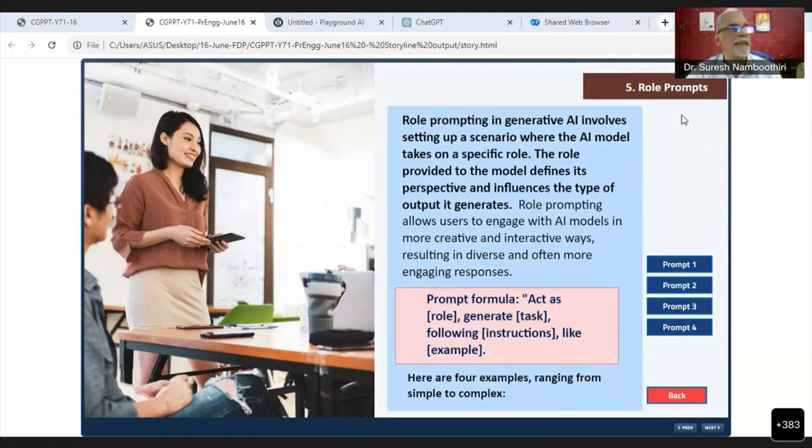Role prompting in generative AI involves setting up a scenario where the AI model takes on a specific role. You have seen the prompt formula here. When there is a role or persona, this prompt formula is: act as [role], generate [task], following [instructions] or like [example].